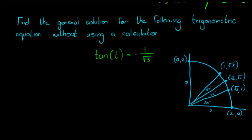OK, there we go, this is the diagram. And we want tan, which is y over x. Y must be 1 and x must be square root of 3, and there we go.